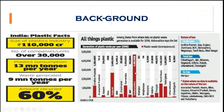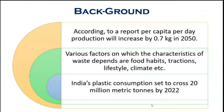The state of Maharashtra has the highest generation of plastic waste, followed by Gujarat, while Jammu and Kashmir is very low by comparison. According to reports, per capita plastic waste production will increase by 0.7 kg per day by 2050. Various factors affecting waste characteristics include food habits, lifestyle, and climate. India's plastic consumption is expected to cross 20 million metric tons by 2022.